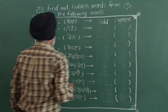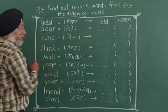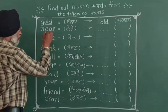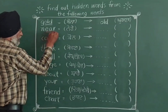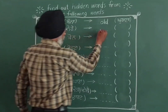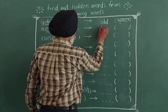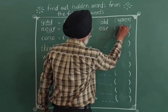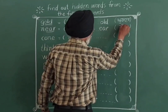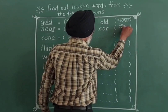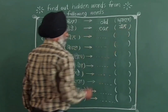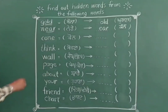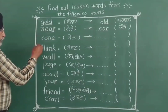The second word is NEAR. Hidden inside NEAR is the word EAR or YEAR. Year is the hidden word found within NEAR.